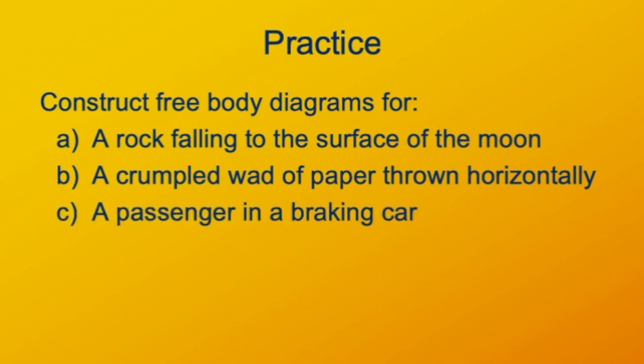A passenger in a car that's braking. In other words, slowing down. So think about what forces are acting on the passenger from the car. We have the car's seat. We have the seat belt. Any of those parts of the car that the passenger is interacting with are fair game.